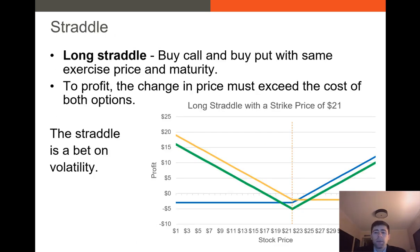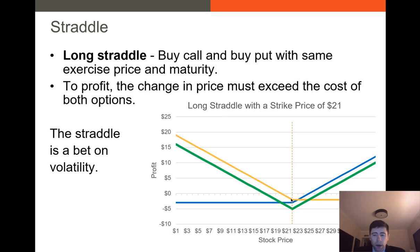A straddle is essentially a bet on volatility — or potentially against volatility. Basically, you are going to buy a call option and also buy a put option with the same strike price — in this case, $21. When you do that, the only place where you lose money is right around the strike price. If our blue is our call option profit and our yellow is our put option profit, our green is our total trading strategy profit. As long as you're outside of $17 and $27, you are in the money.